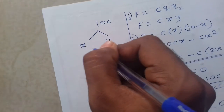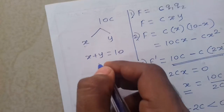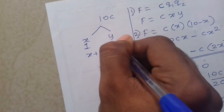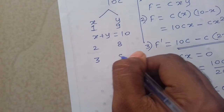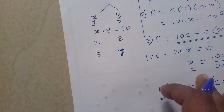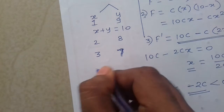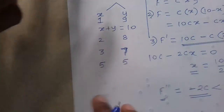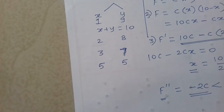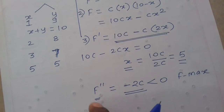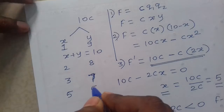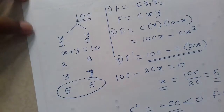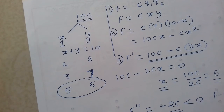Matlab ka matlab kya hai: 10 coulomb charge ko divide kiya. Agar first charge 1 coulomb toh second ae ga 9 coulomb, agar 2 coulomb toh 8 coulomb, agar first charge is 3 coulomb then second charge is 7 coulomb. And if first charge is 5 coulomb then second is also 5 coulomb. 10 coulomb ko divide karna between two charges such that force between them is maximum - maximum aata when x is 5. Matlab agar 10 coulomb ko 5 coulomb aur 5 coulomb, 2 parts mein divide karein toh unke beech jo force hai wo maximum hai.